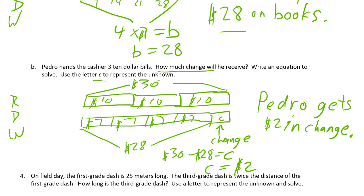On field day, the first grade dash is twenty-five meters long. The third grade dash is twice the distance of the first grade dash. How long is the third grade dash? Use a letter to represent the unknown and solve. We read it — the first graders don't run quite as far as the third graders, about half as far. Let's draw it. We know the first graders run 25 meters and the third graders go twice as far.